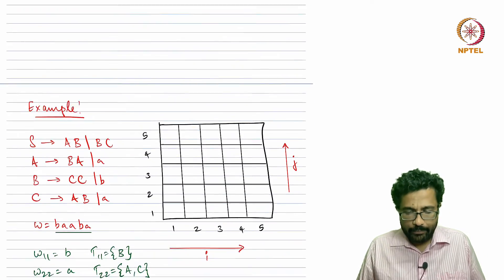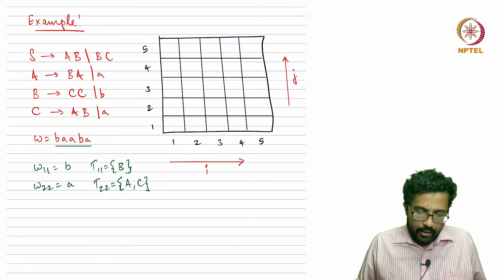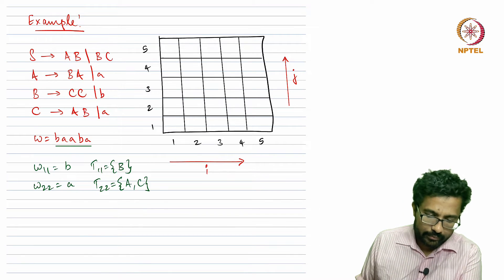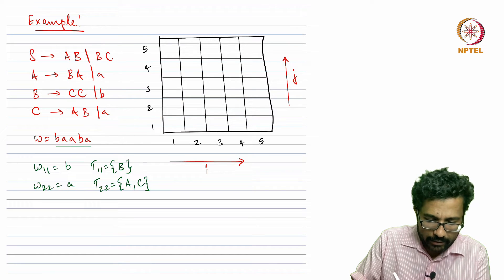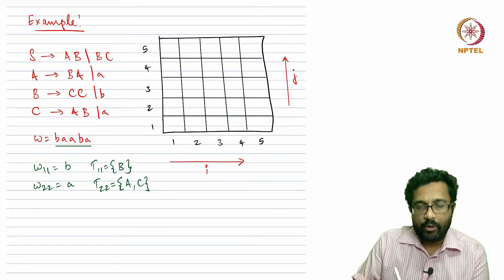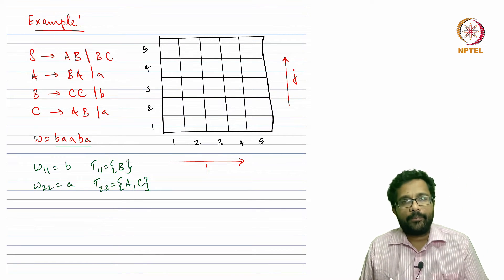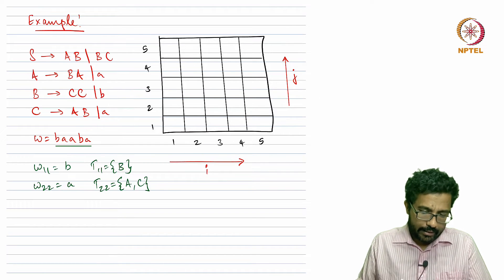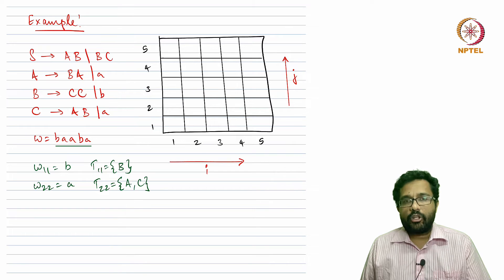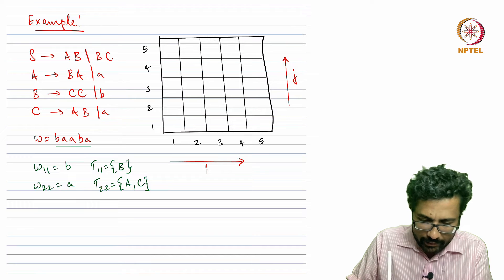Let us work out an example to make this clear. The grammar rules are: X gives a; b and b gives c; a gives b, a; b gives c, c and b; c gives a, b and a. The string we need to check is b, a, a, b, a. We can verify that this grammar is in Chomsky Normal Form.